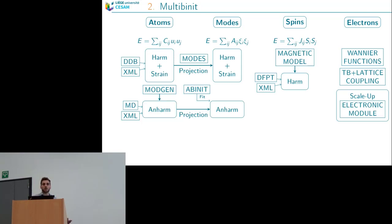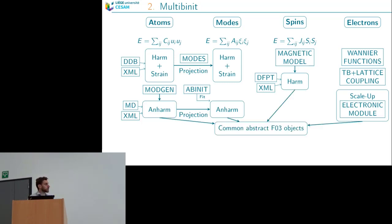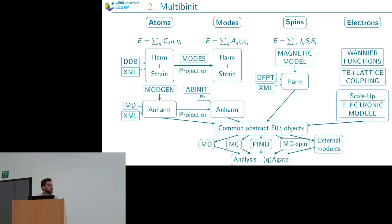All these potentials are very different and have very different properties. We developed a common abstract layer to merge all the potentials and be able to mix them — for example, the lattice potential with the spin potential, or the lattice potential with the electronic potential. Once we have this abstract layer, we can run any dynamics: molecular dynamics, Monte Carlo, PIMD (path-integral molecular dynamics), spin dynamics, or external tools. Results can be analyzed with AGAT or QAGAT.